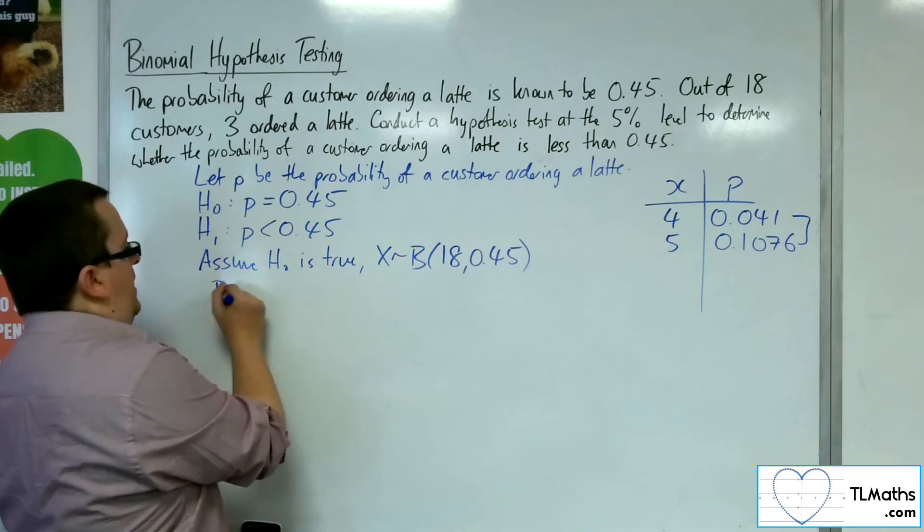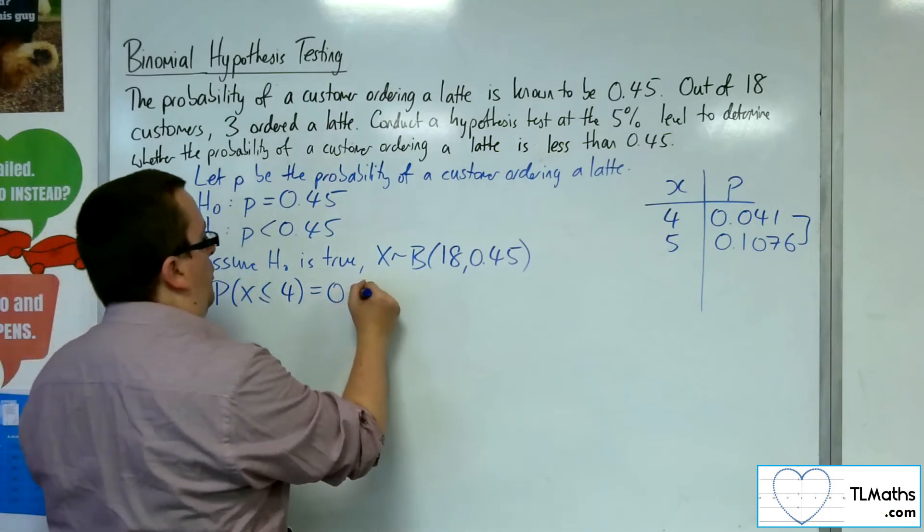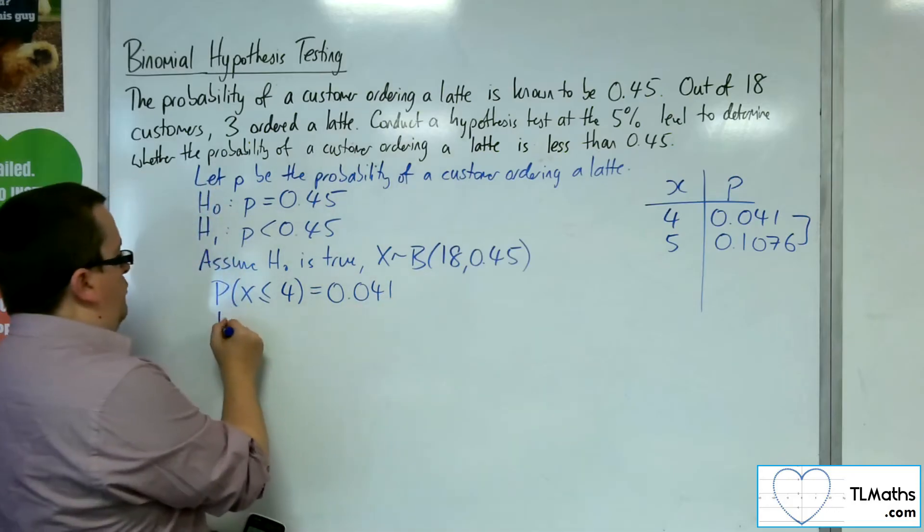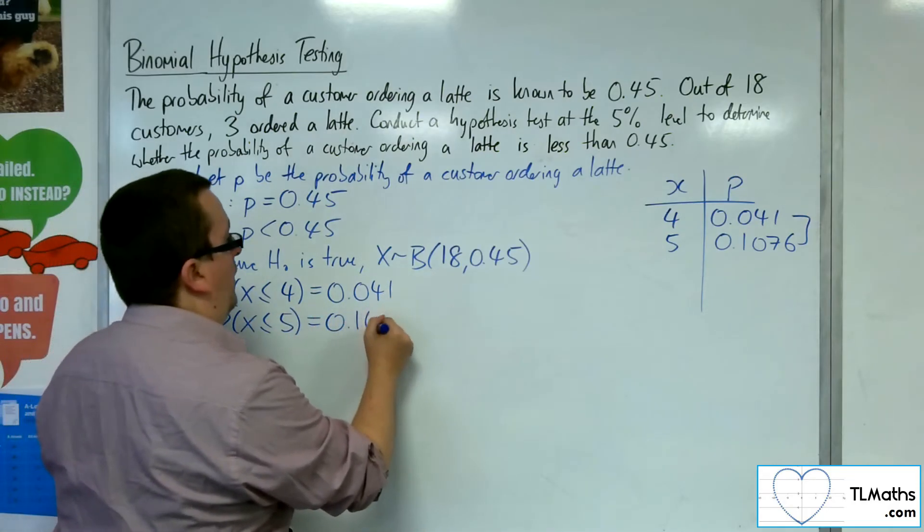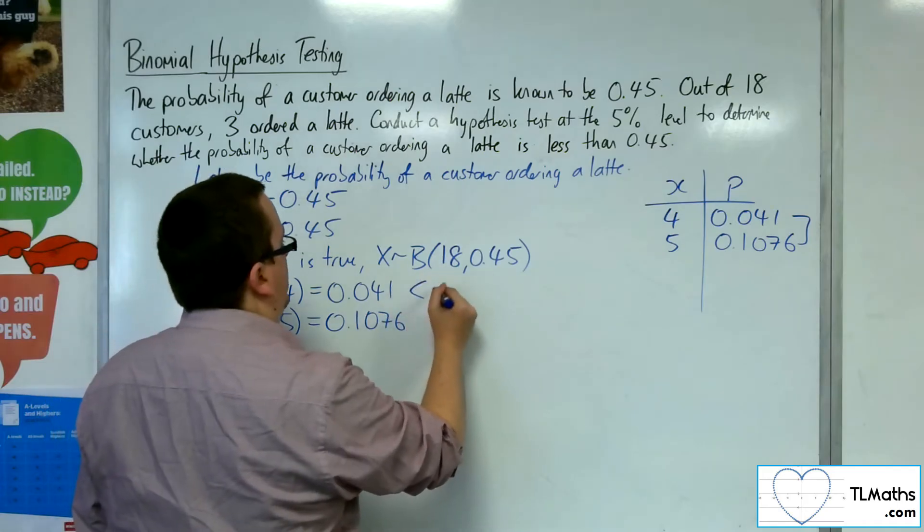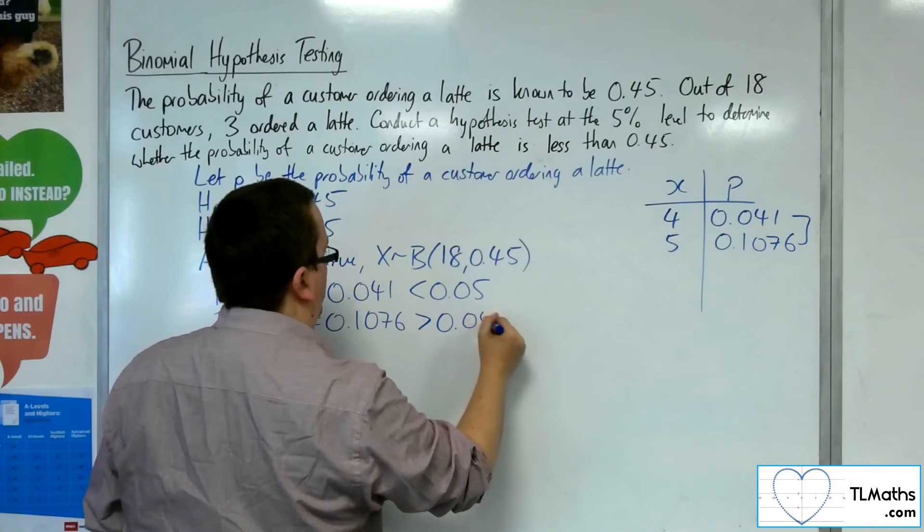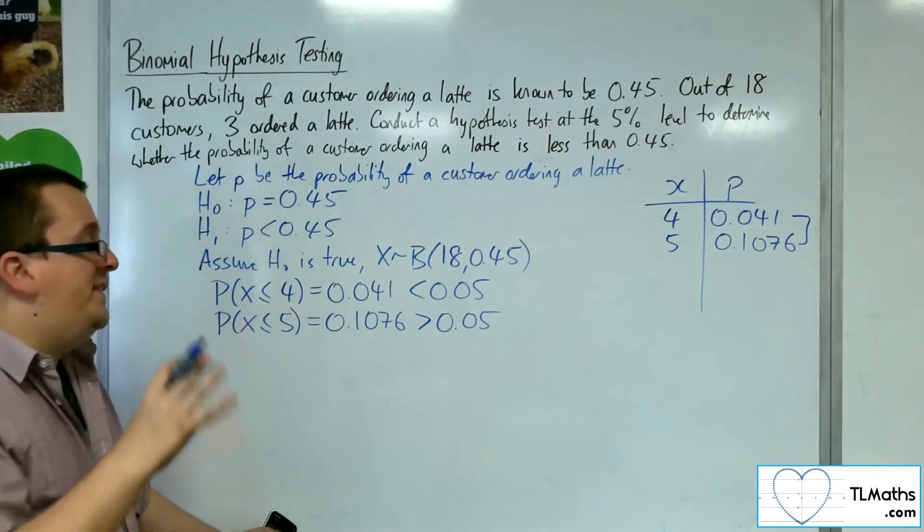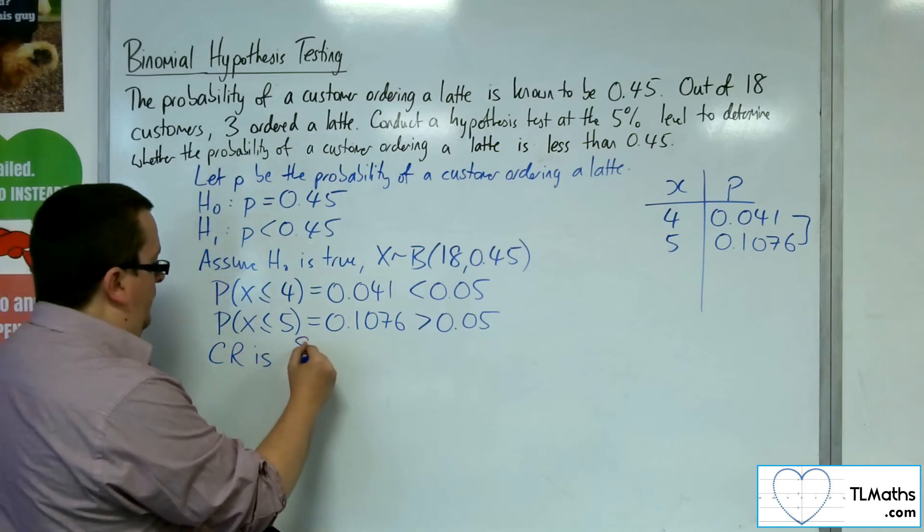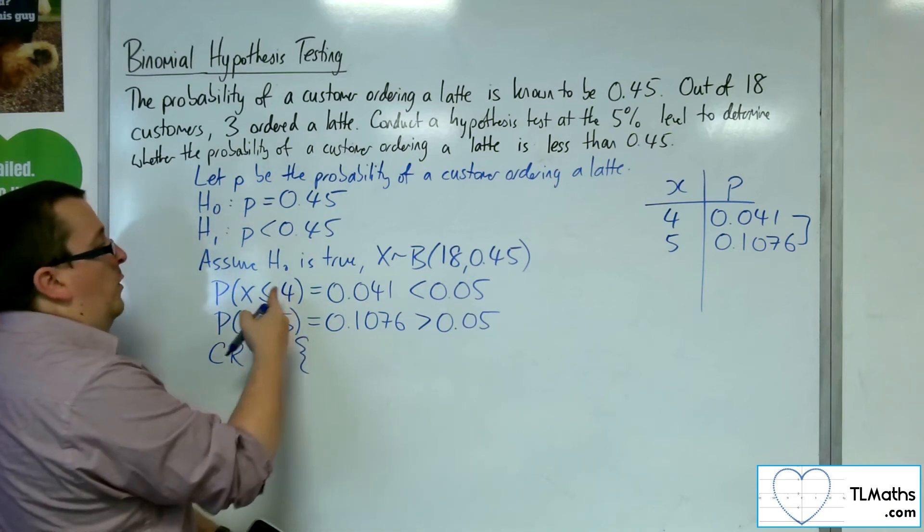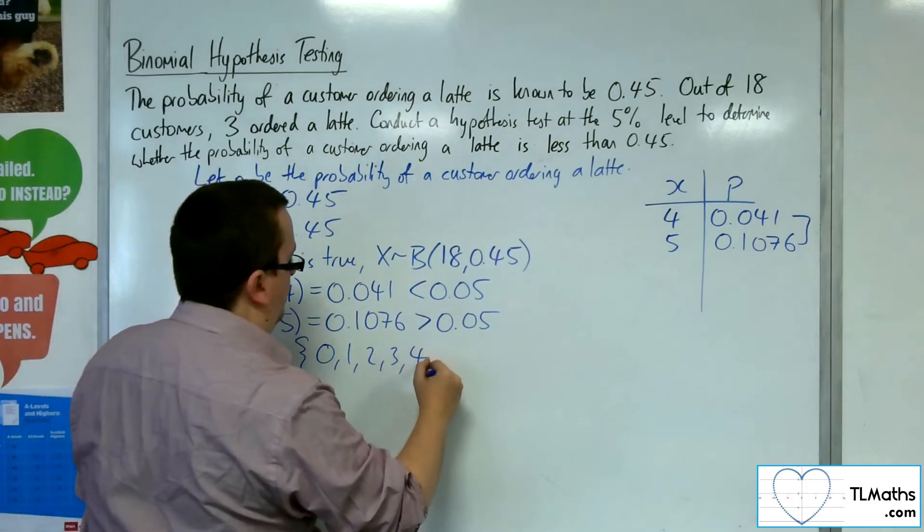The probability that X is less than or equal to 4 is 0.041, and the probability of X less than or equal to 5 is 0.1076. This one is less than the significance level; this one is greater. The one that is less than identifies the critical region, so the critical region is 4 or less: 0, 1, 2, 3, and 4.